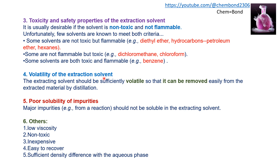The fourth property is volatility. The extraction solvent should be sufficiently volatile so that it can be easily removed from the extracted material by distillation; a low boiling point is preferred. The fifth property is poor solubility of impurities — major impurities from the reaction should not be soluble in the extraction solvent. Other desirable properties include low viscosity, non-toxicity, low cost, ease of recovery, and sufficient density difference with the aqueous phase.